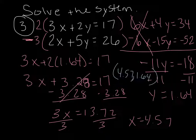That's elimination day two. Make sure you take all those notes and you understand what to multiply by. When in doubt, just multiply the top by the bottom number and the bottom by the top number, and make sure one of them is negative. We'll see you tomorrow.